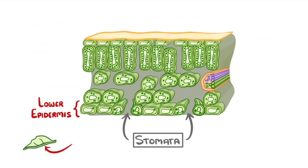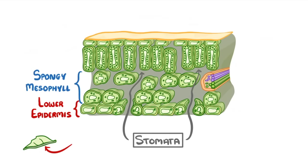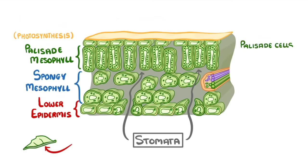Once the carbon dioxide has diffused through these little holes, it moves up the leaf and enters the spongy mesophyll tissue, which has lots of air gaps between the cells, so that the gas can easily diffuse through to the next layer, which we call the palisade mesophyll layer. This is where most of the photosynthesis happens, and so the palisade cells are packed full of chloroplasts.